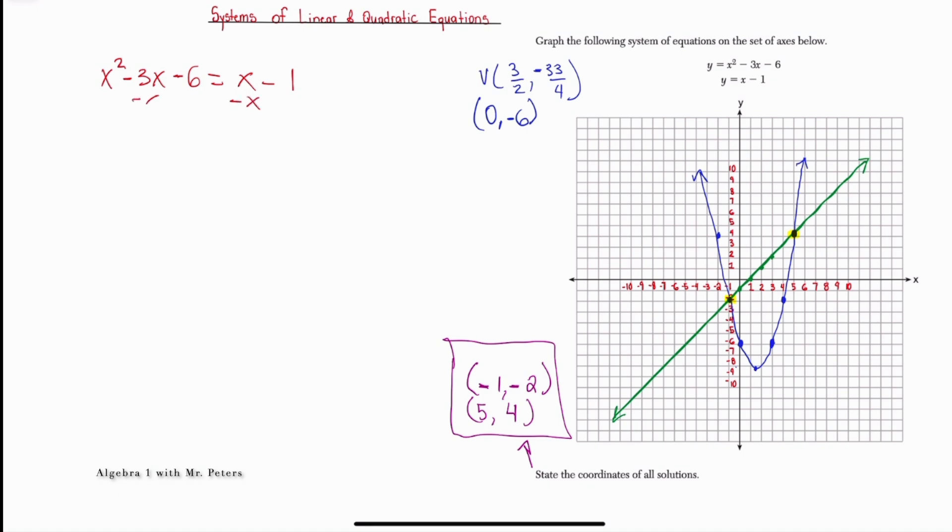So we'll subtract x. We'll get x squared minus 4x minus 6 is equal to negative 1. We add 1 on both sides. Now we have x squared minus 4x minus 5 is equal to 0.